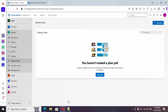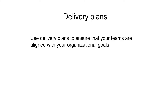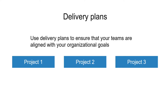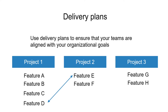What is a delivery plan and what is the purpose for creating it? Make use of delivery plans to ensure that your team is aligned with the organization's goal. Let's say you have several projects — project 1 to project 3 — and they have dependencies across projects. For example, feature D from project 1 is interlinked with feature E of project 2. You can use this delivery plan to ensure that you are aligned with the goal. At the end of this video we will see tips and important points, so don't skip the final part.